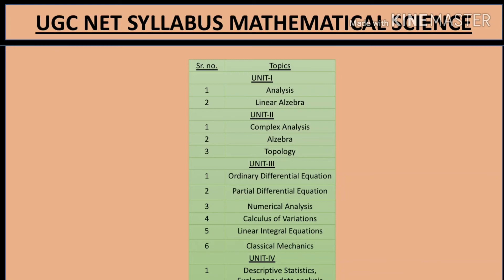Now let's look at the Physical Sciences exam pattern. There will be 3 parts. Part A has 20 questions worth 30 marks. Part B has 25 questions worth 70 marks. Part C has 30 questions worth 100 marks.